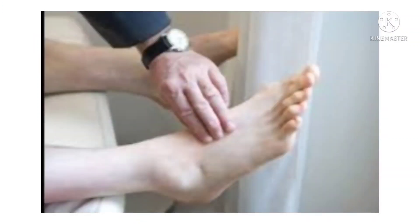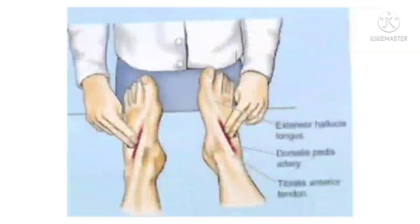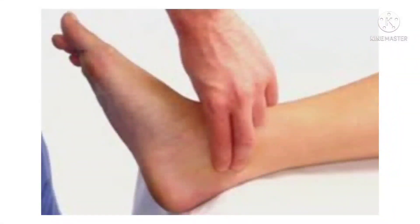The dorsalis pedis artery pulse can be palpated lateral to the extensor hallucis longus tendon, or medially to the extensor digitorum longus tendon, on the dorsal surface of the foot, distal to the dorsal-most prominence of the navicular bone, which serves as a reliable landmark for palpation.